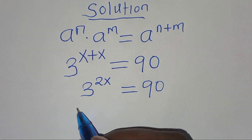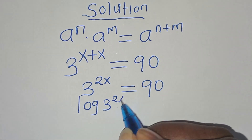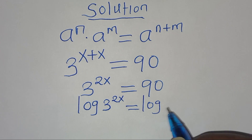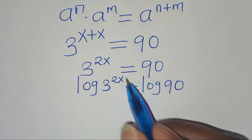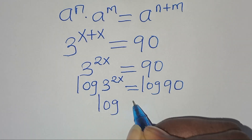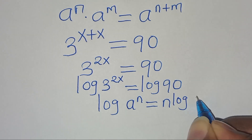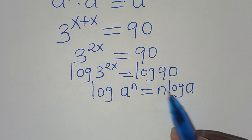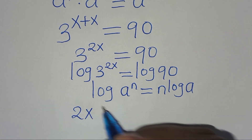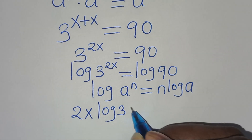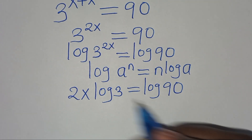To solve for x, we introduce logarithm on both sides, so that we have log of 3 to the power of 2x equals log 90. Now log 3 to the power of 2x is in the form of log a to the power of n, which we can express as n·log a. Applying this power property of logarithm, log 3^(2x) becomes 2x·log 3, and this equals log 90.